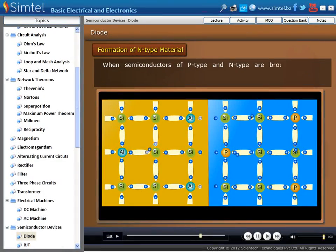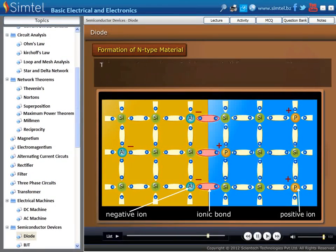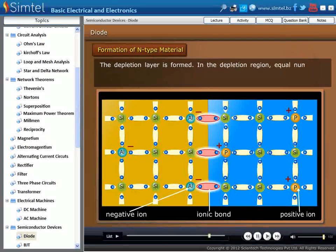As we see in an animation, when semiconductors of P-type and N-type are brought together, electrons and holes migrate across the junction. Due to this, depletion layer is formed.